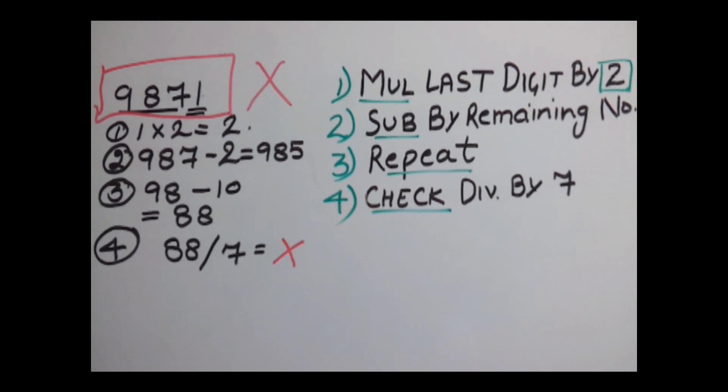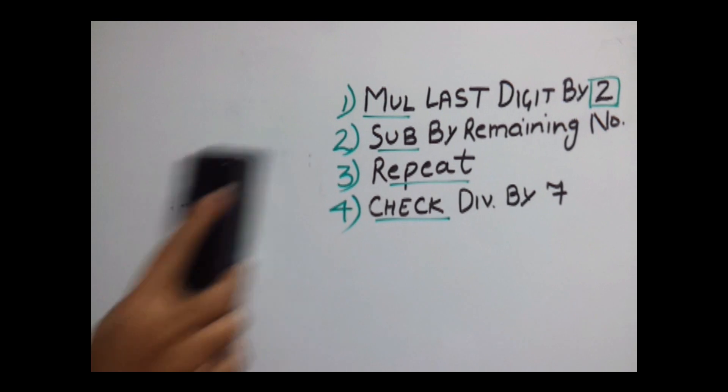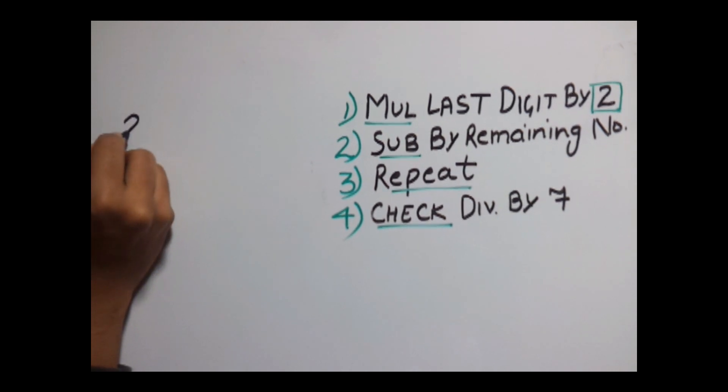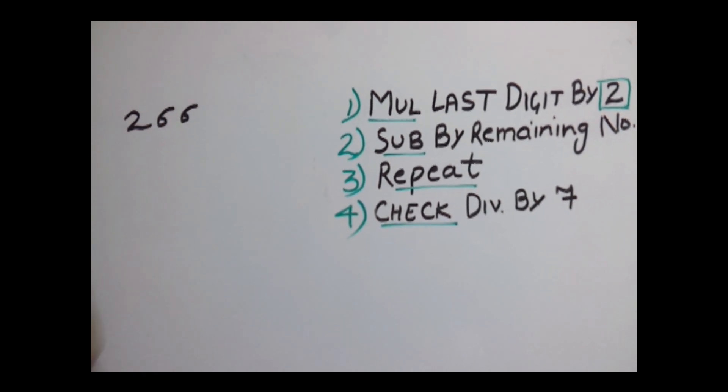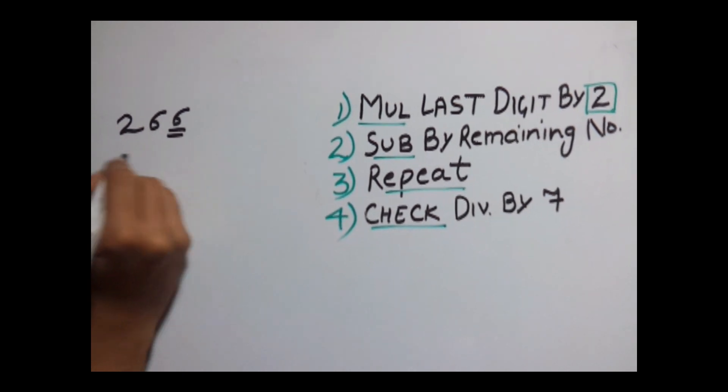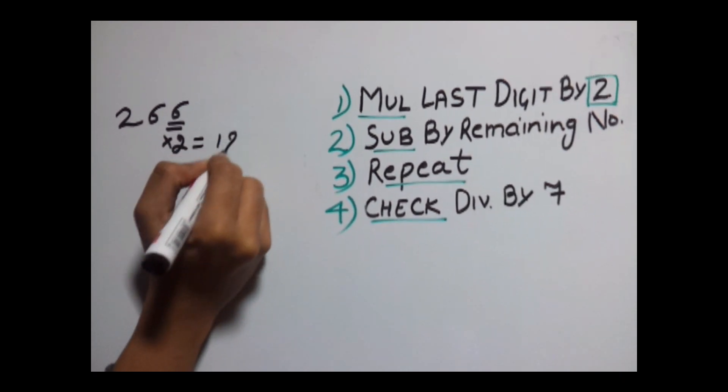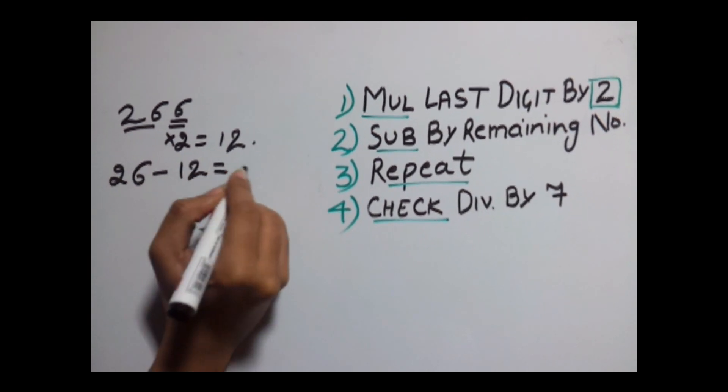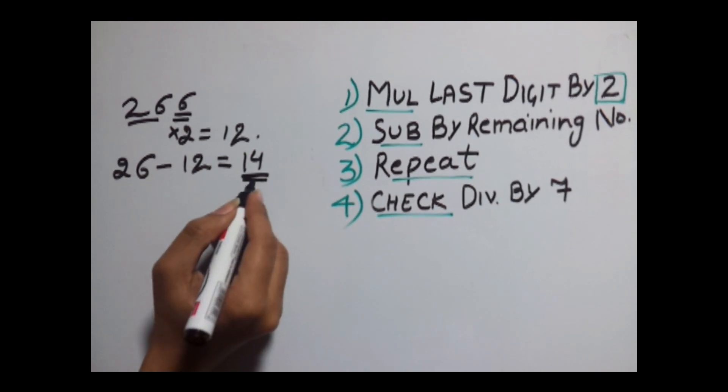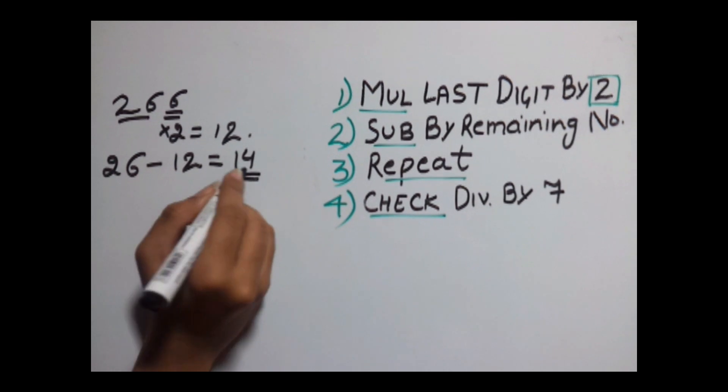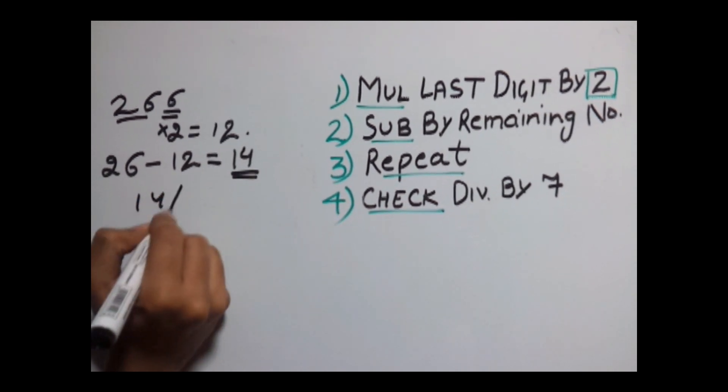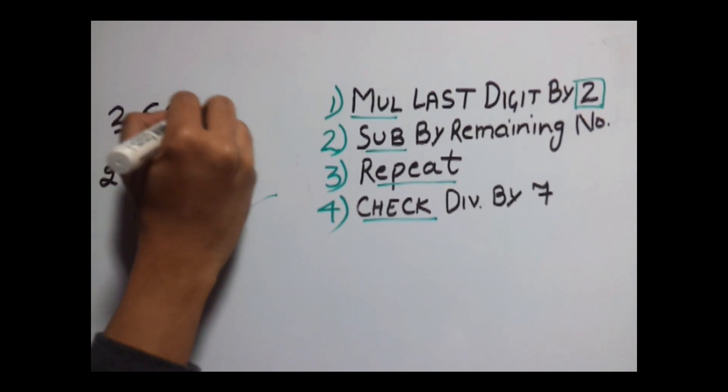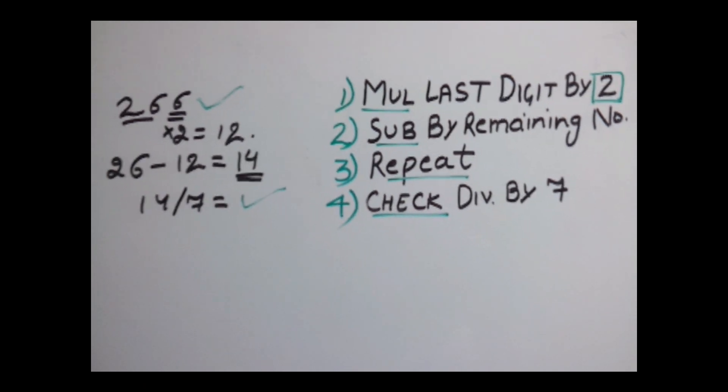Let's have another example. Let's take 266. So multiplying the last digit by 2 gives us 12. Subtracting it from the remaining number, that is 26, 26 minus 12 gives us 14. And because it's a 2-digit number, there is no need to repeat the process. So is 14 divisible by 7? Yes, it is divisible by 7. So our number is also divisible by 7.